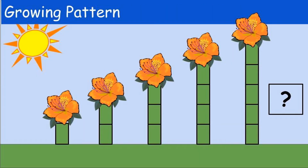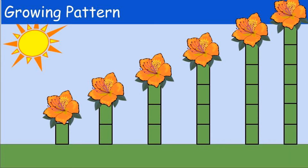Check out this example of a growing pattern. Notice that the flower is getting taller. How many rectangles are in each flower? Do you notice that it's growing by one? So what is the next flower going to look like — how many rectangles will it have? Our first flower has one rectangle, the second has two, the next is three, the next has four, the next has five, and so our final flower stem should have six rectangles in it. Good job boys and girls!